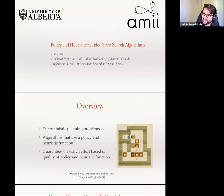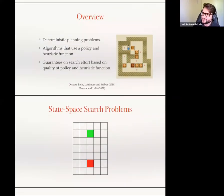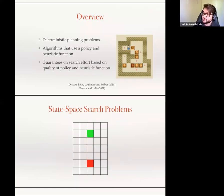Even if you haven't taken any AI course, I hope you'll be able to follow most of the talk. Let's get started with state-space search problems. The simplest example is a grid where an agent navigates from a green starting square to a red goal square. In this case, the agent simply has to move down four times. We could use very classic algorithms like Dijkstra's algorithm to solve this.